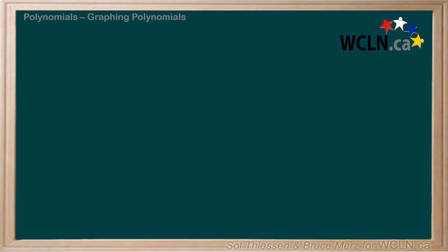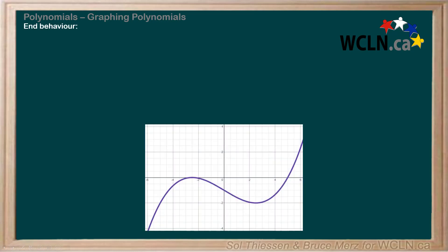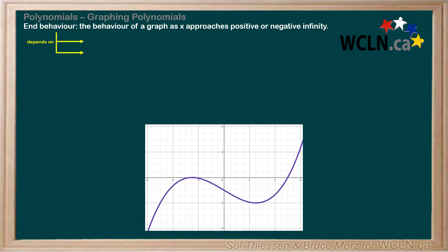In this lesson, we will discuss end behavior, with an example graph to help us visualize. End behavior refers to the behavior of a graph as x approaches positive or negative infinity. Polynomial end behavior depends on two things: whether the degree is even or odd, and the sign of the leading coefficient.